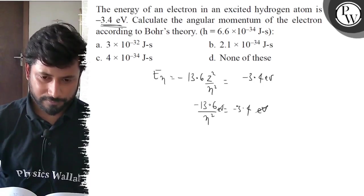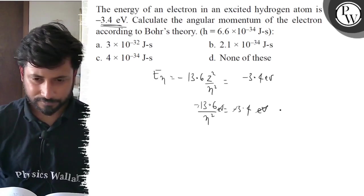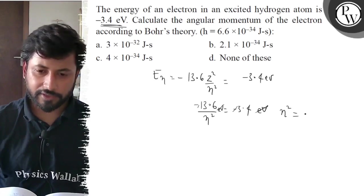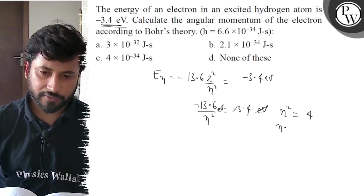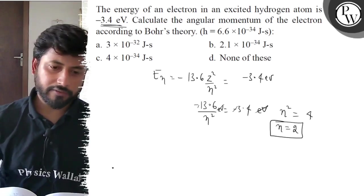Minus cancels minus. n² equals 4, so n equals 2. If n equals 2, then we can calculate angular momentum.